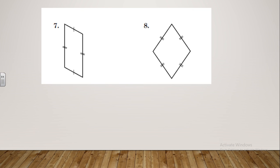Welcome back. Let's see your answers. Number seven — I'm sure your answer is correct: it's a parallelogram. What about number eight? That's a rhombus.